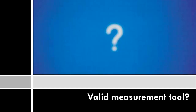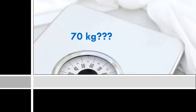Now let's take a look at the validity of a measurement tool — in this case, the scale. What if you really weighed 70 kilograms? Is the scale actually measuring accurately if it continues to measure 65 kilograms? If the scale is not working properly, this number may not be your actual weight. This is an example of a scale that is reliable or consistent but not valid.